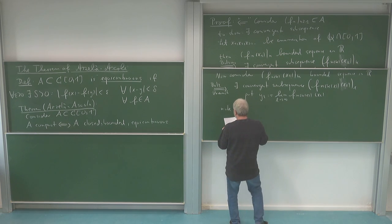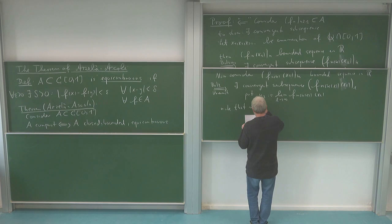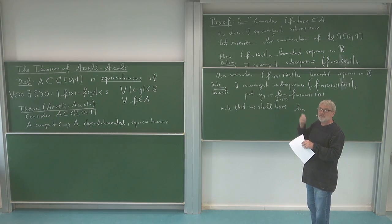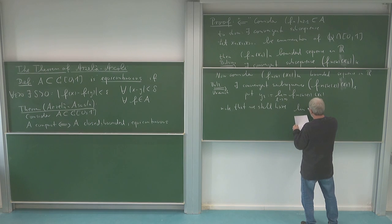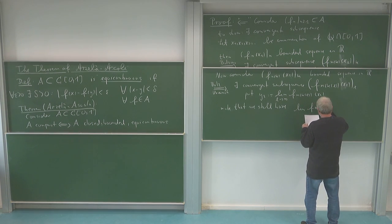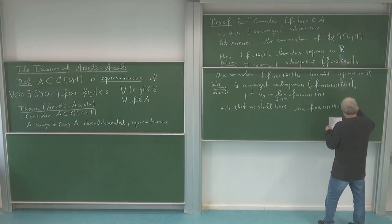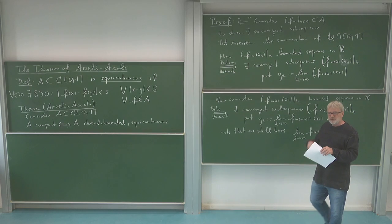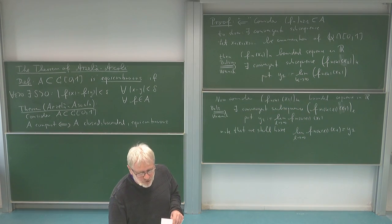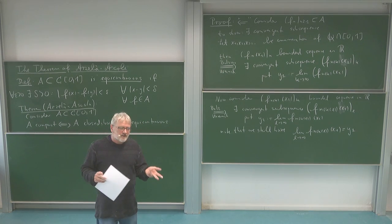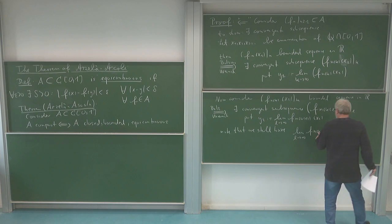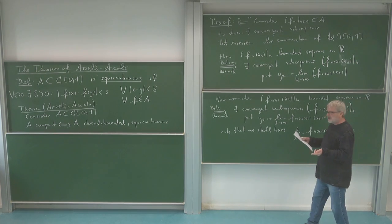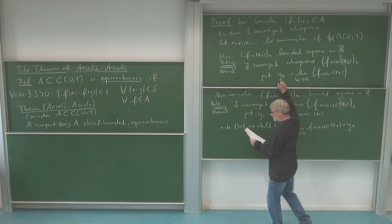We can improve things at x₂ without losing what we already have at x₁. For this sub-subsequence, the limit of f_{n_{k_l}}(x₁) is still y₁ as before. Now I continue in this way: look at x₃ and choose a subsequence of the subsequence of the subsequence to make things right also at x₃. At some point I will run out of letters for notating the subsequences, so it's better to rename them.